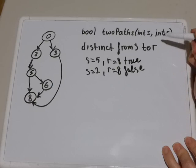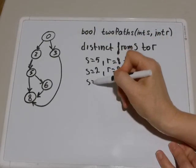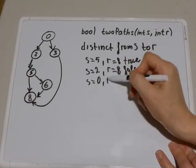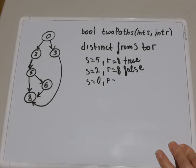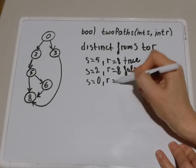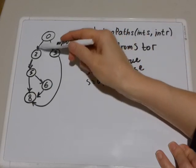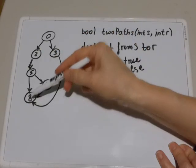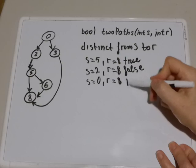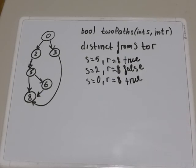For this case, if you have s equals 0 and r equals 8, then your algorithm will also return true because there are two distinct paths, namely 0, 2, 5, 8 and 0, 3, 8. So your algorithm in this case will return true.